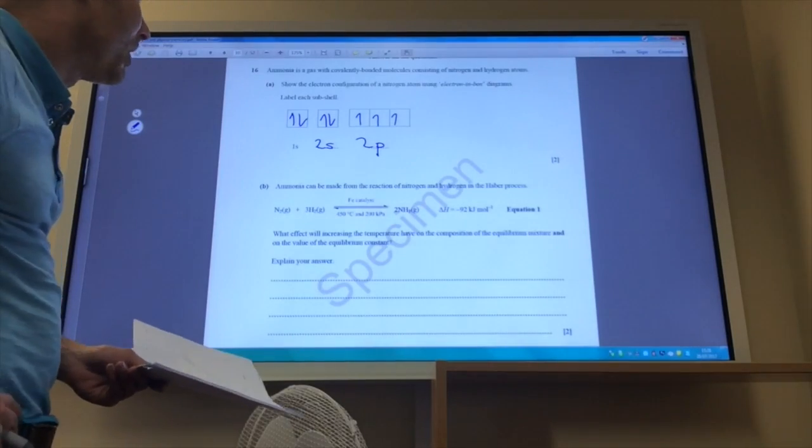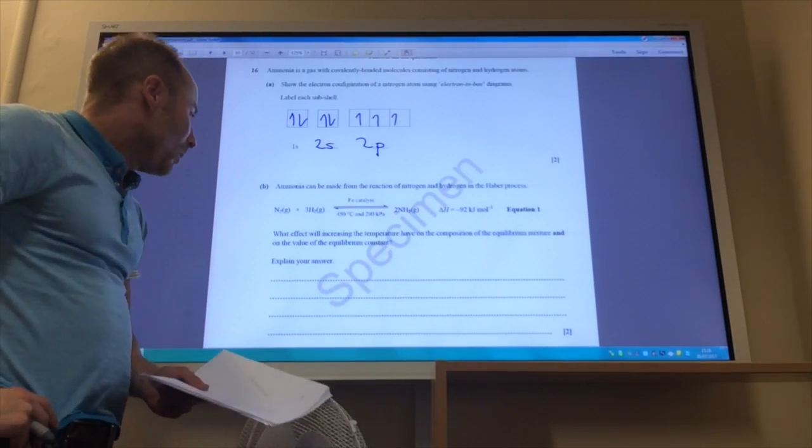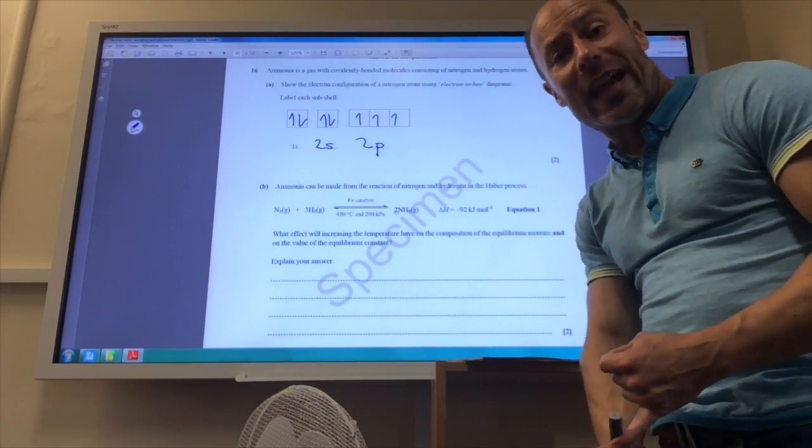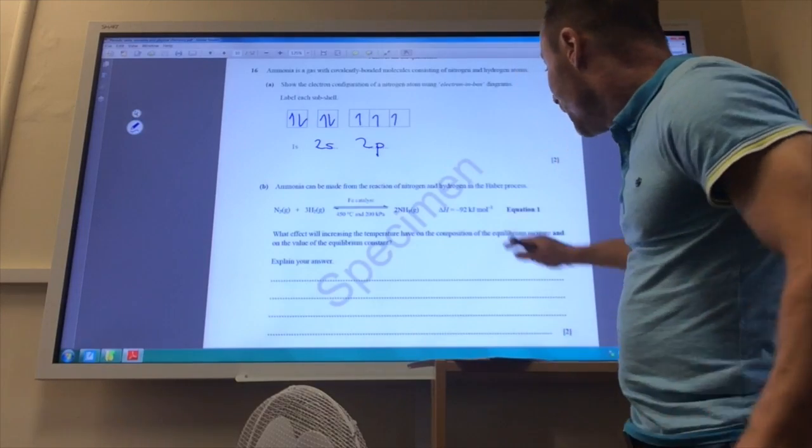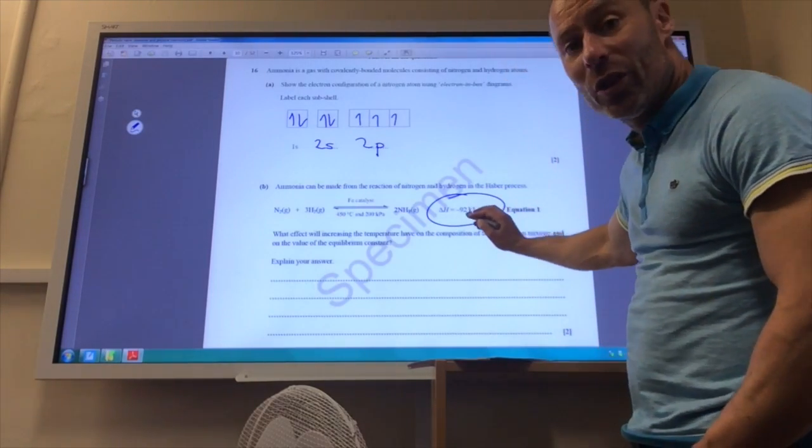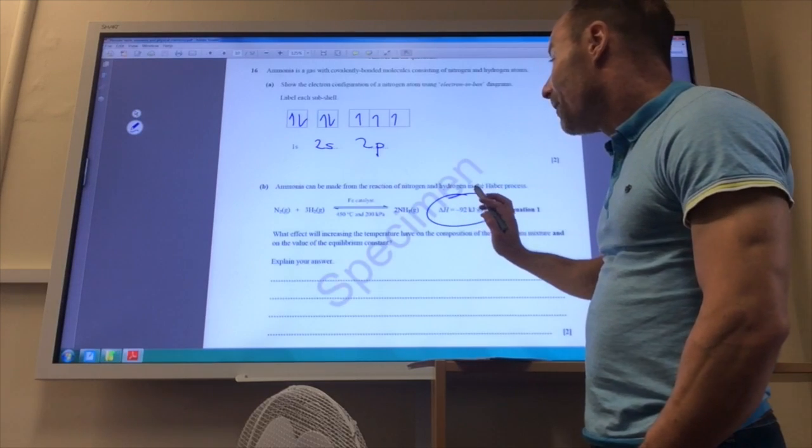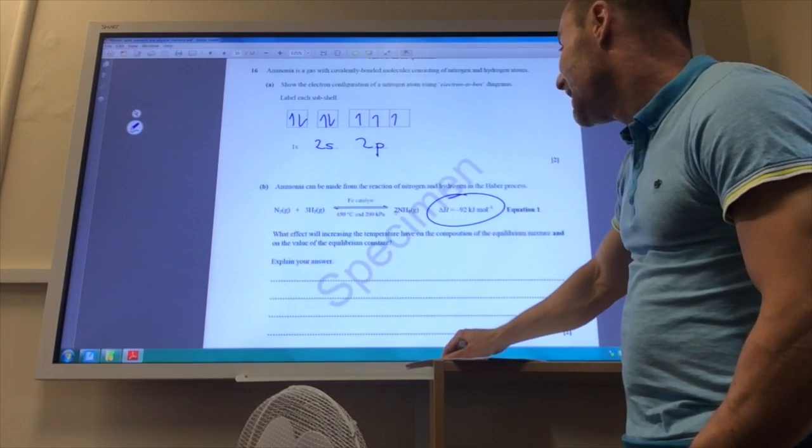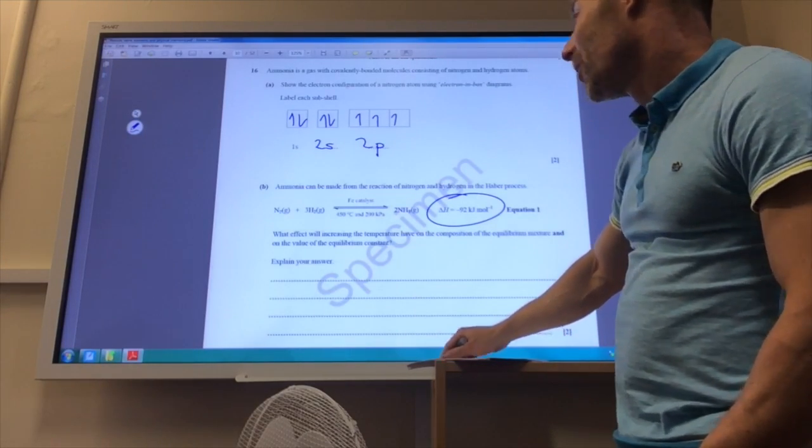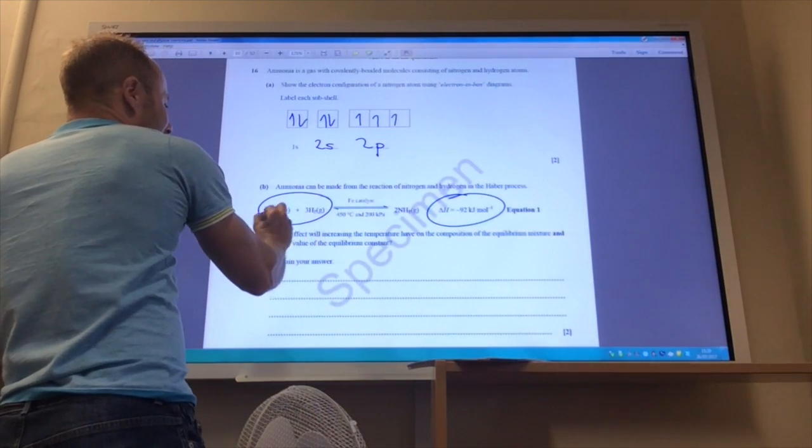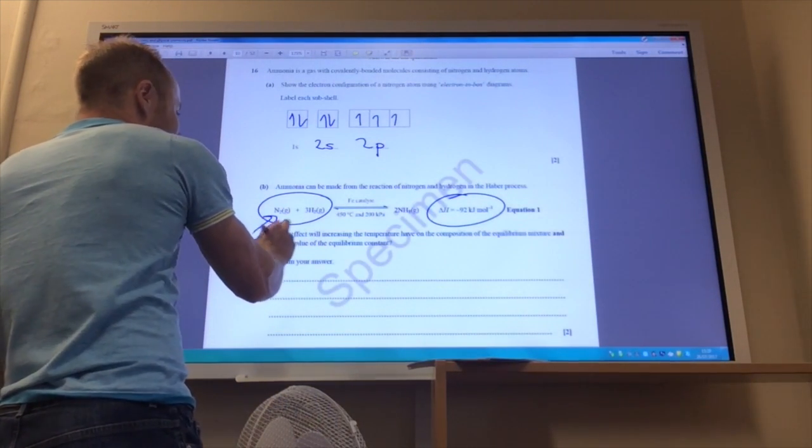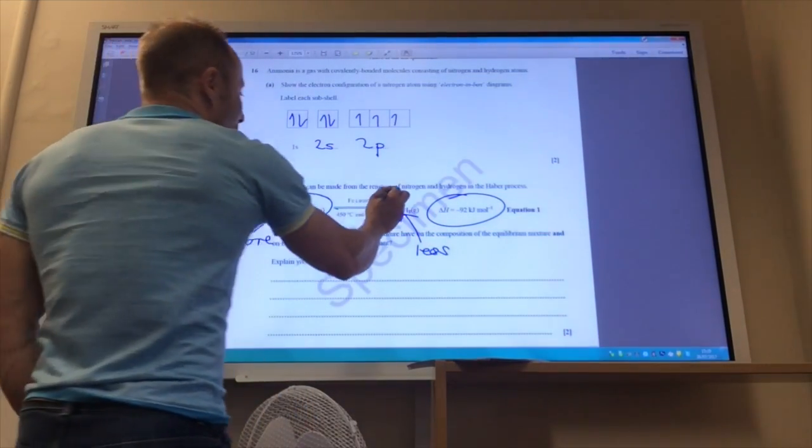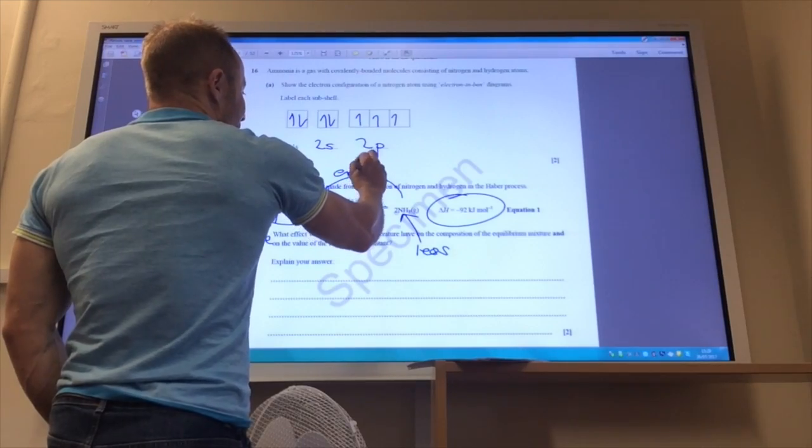Ammonia can be made from the reaction of nitrogen and hydrogen in the Haber process. What effect will increasing the temperature have on the composition of the equilibrium mixture and on the value of the equilibrium constant? Okay, well if you have a look here, the forward reaction is exothermic, so if you increase the temperature that will make the reaction go in the endothermic direction, so it will go backwards. So the yield will be less, so I will have more N2 and H2 and I will have less ammonia because it will go in the endothermic direction.